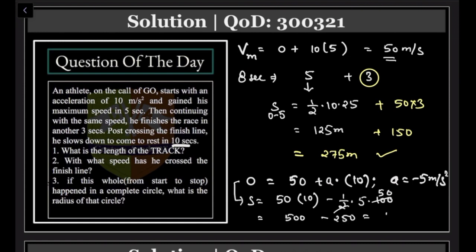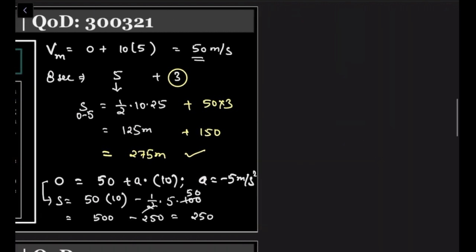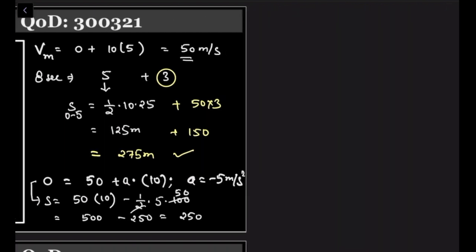So please understand, the total distance covered in a circular order is 275 plus 250, coming out to be 525.